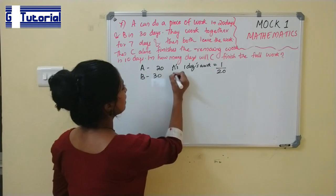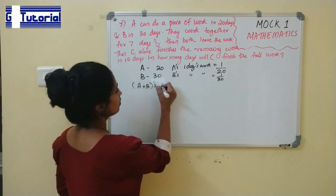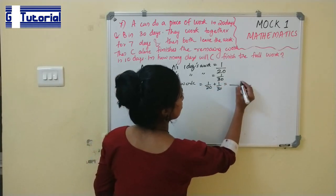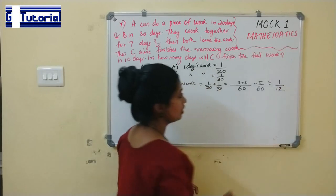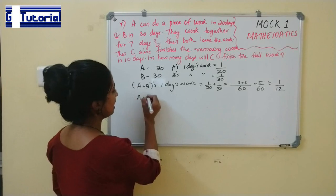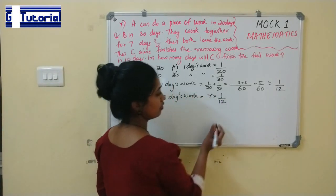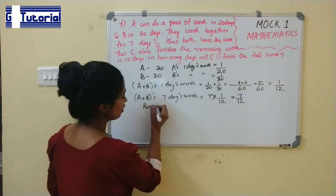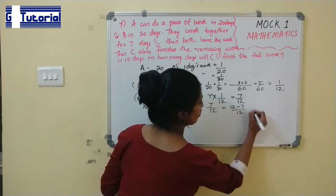A + B's combined 1 day's work = 1/20 + 1/30 = 3/60 + 2/60 = 5/60 = 1/12. They work together for 7 days, so 7 days' work = 7 × 1/12 = 7/12. Remaining work = 1 - 7/12 = 5/12.